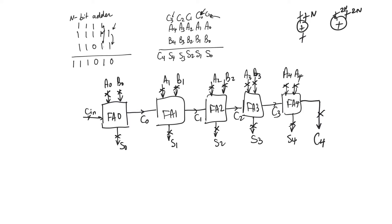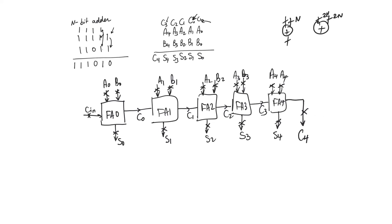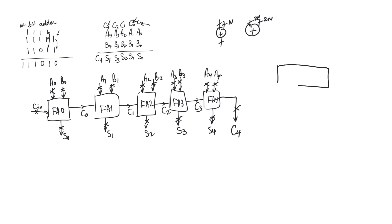So I'm going to draw crosses representing registers at all the inputs and at all the outputs. Afterwards, for more complicated adders, I'm not even going to draw these crosses — we'll just assume that there are registers at the inputs and the outputs. So what we want to find now is the critical path, which means the longest delay between any input register and any output register. So what we have here is a 5-bit adder. A is 5 bits, B is 5 bits, and S is, strictly speaking, 6 bits.